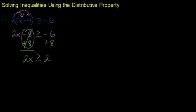Now we divide because this is two times x. The inverse of multiplying by two is to divide by two. Dividing both sides by two gives us x is greater than or equal to one.